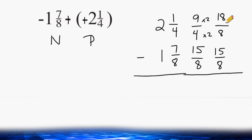Now we can take 18 and 15 and subtract those numerators, which gives us 3. The denominator stays the same. So we have a value of 3 eighths.